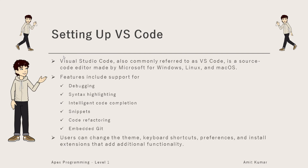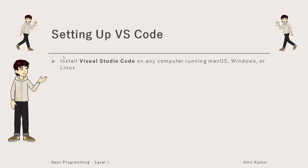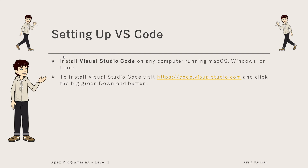Users can change the theme, keyboard shortcuts, preferences, and install extensions that add additional functionality. To install Visual Studio Code on any computer running macOS, Windows, or Linux, you have to visit a specific URL.